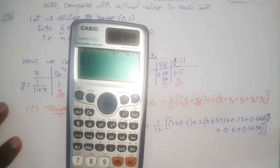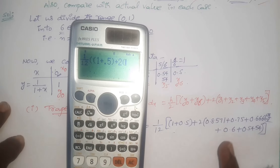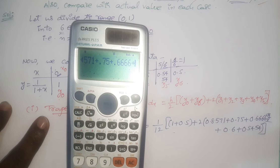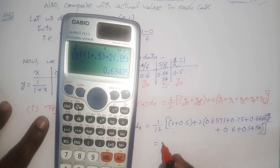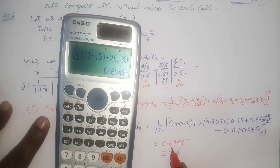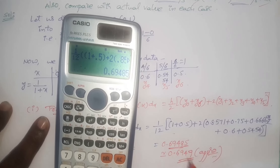Calculating using the scientific calculator: 1 divided by 12, open brackets, 1 plus 0.5 plus 2 times of 0.8571 plus 0.75 plus 0.66666 plus 0.6 plus 0.5454, close brackets. I got 0.69485, which is approximately equal to 0.6949.